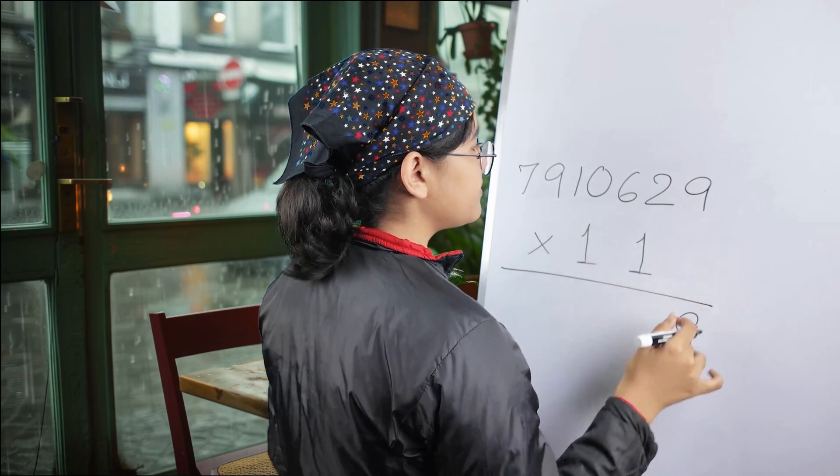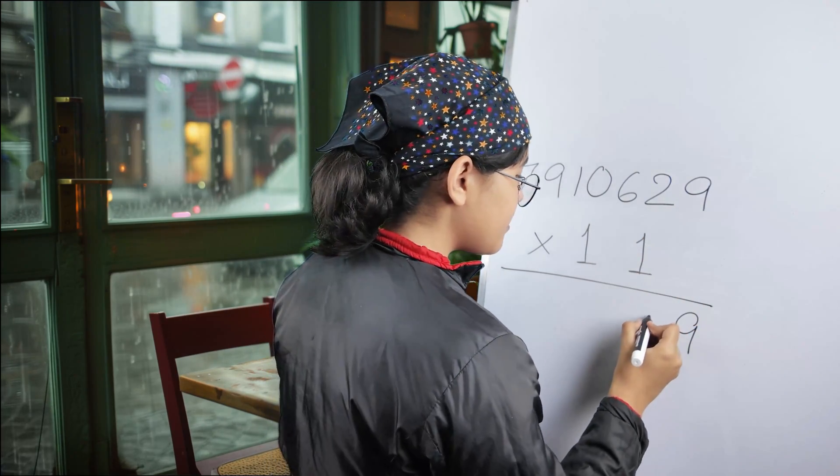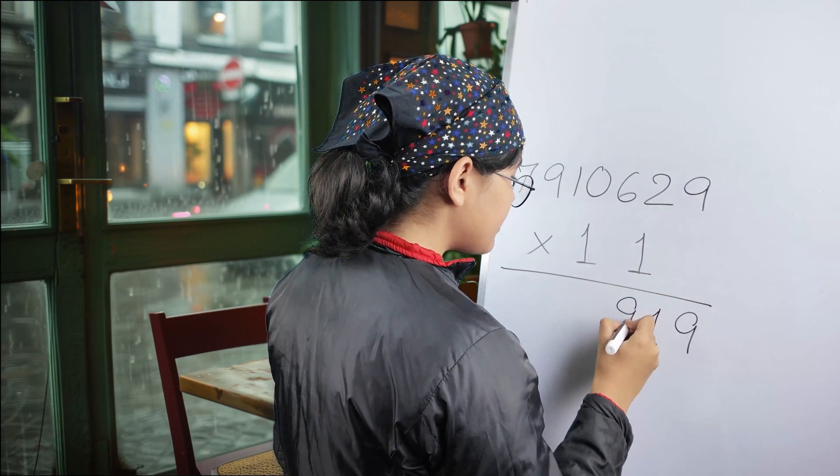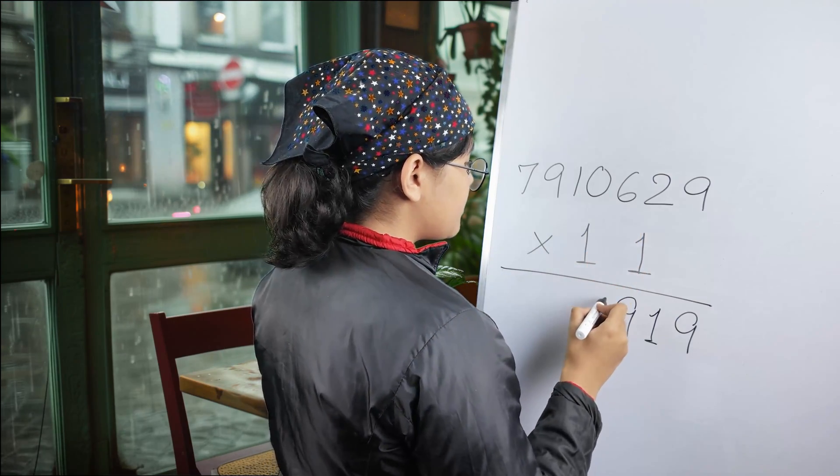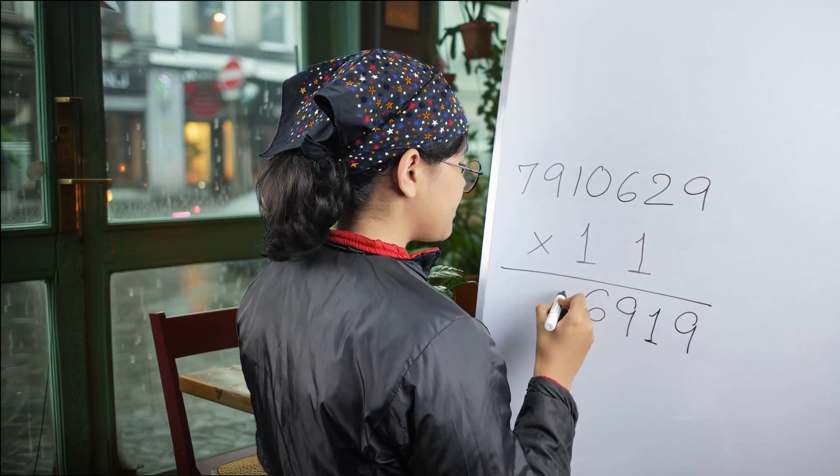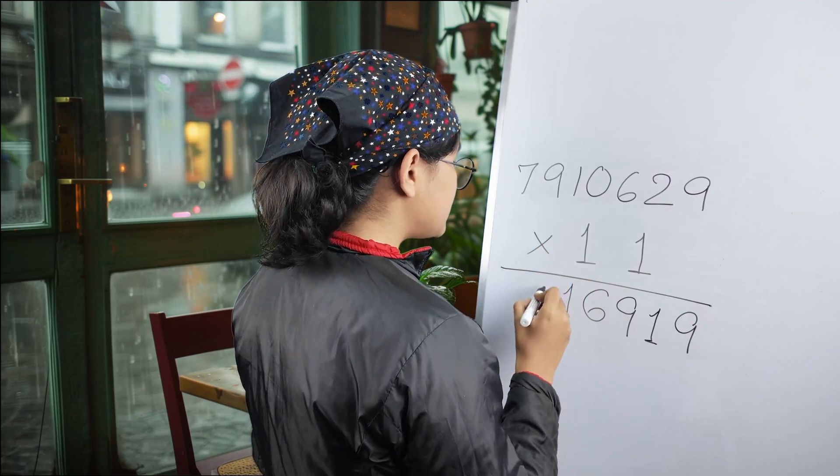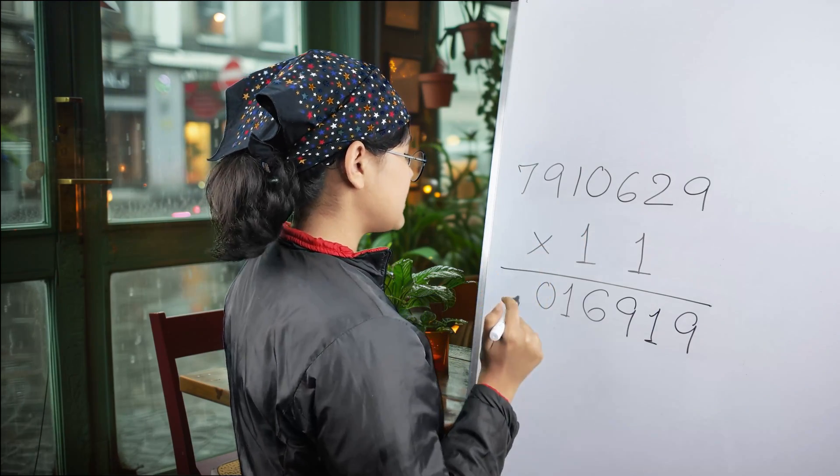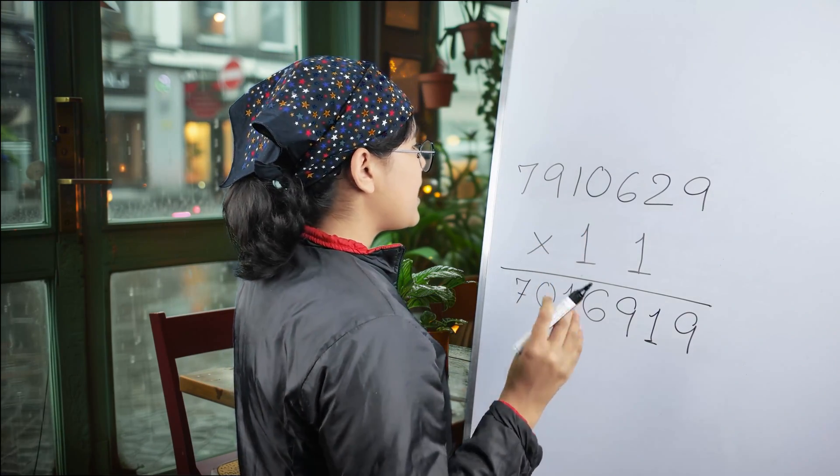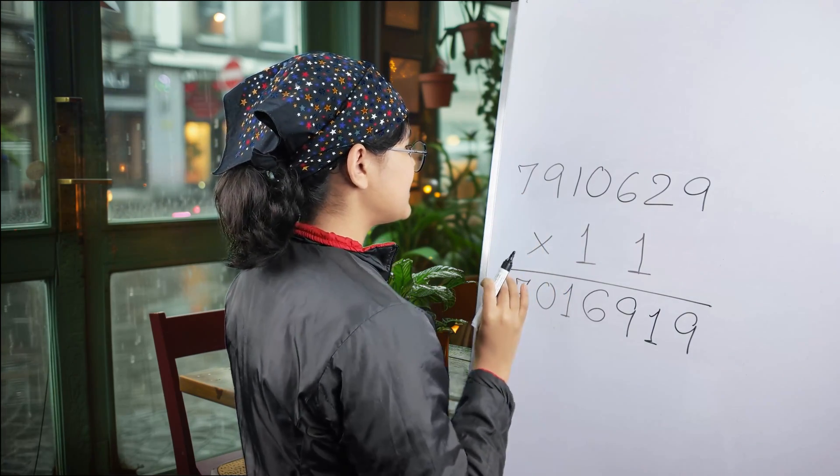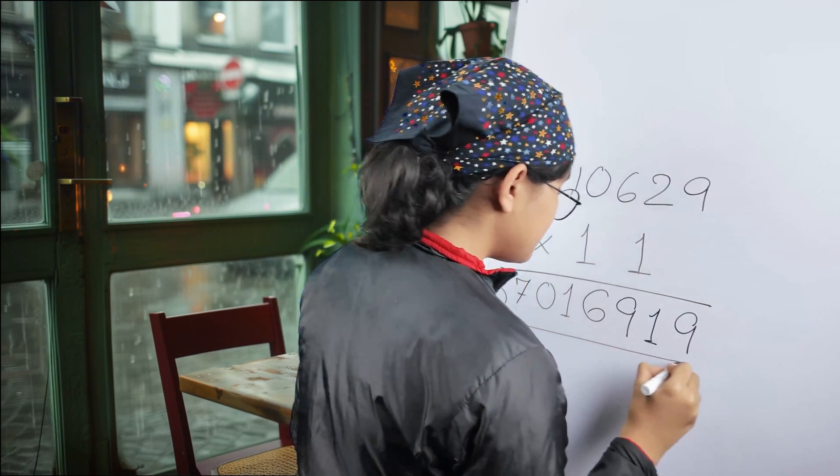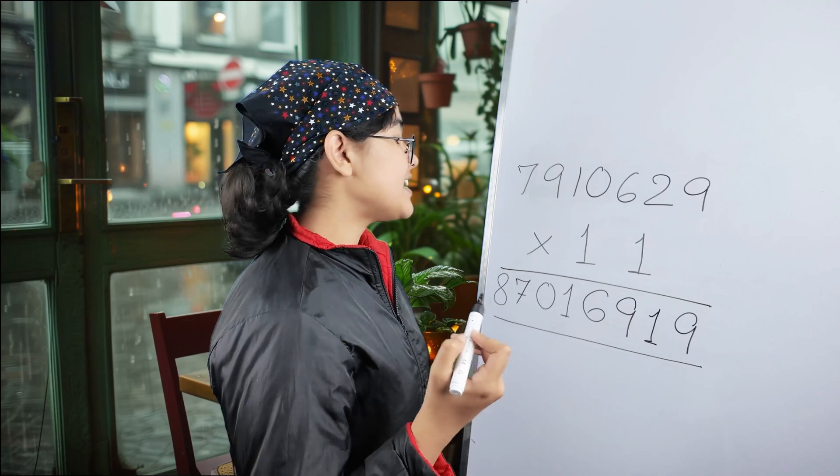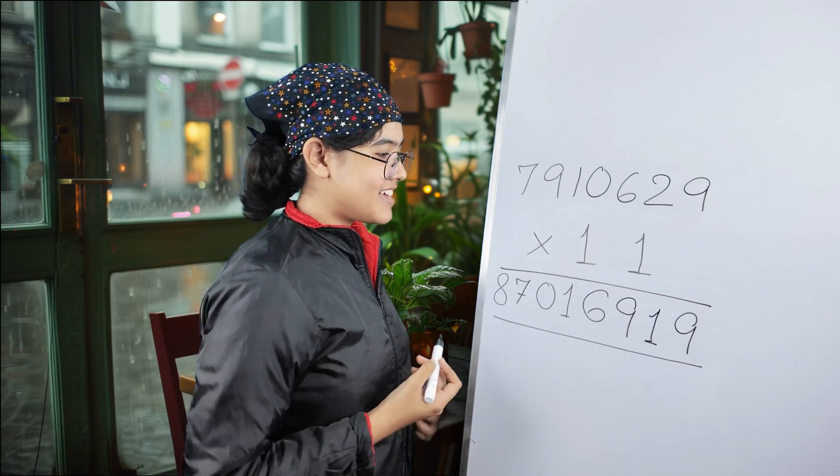9 here. 2 plus 9 equals 11. 1 in hand. 6 plus 2 equals 8, plus 1, 9. 0 plus 6 equals 6. 0 plus 1 equals 1. 9 plus 1 equals 10, 1 for carryover. And 7 plus 9 equals 16, plus 1 is 17. And 1 for carryover, plus 7 equals 8. So your answer for this big one is 87,016,919. Good one.